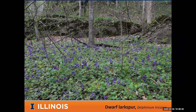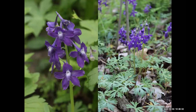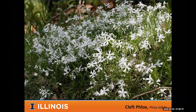Getting into later spring, things like dwarf larkspur — that dark purple color is like nothing else. Look closely and you'll see spurs out the back of the flowers, all arranged on a little spike. Really a neat plant altogether.